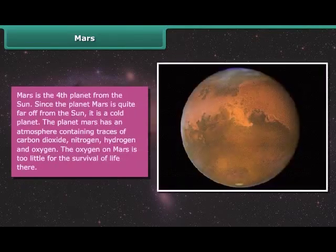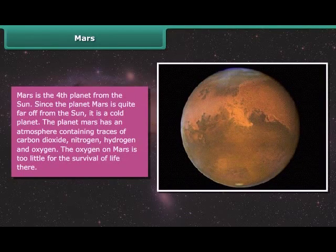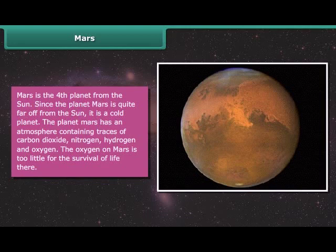Mars is the fourth planet from the Sun. Since the planet Mars is quite far off from the Sun, it is a cold planet. The planet Mars has an atmosphere containing traces of carbon dioxide, nitrogen, hydrogen and oxygen. The oxygen on Mars is too little for the survival of life there.